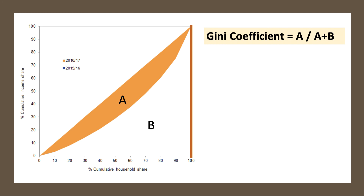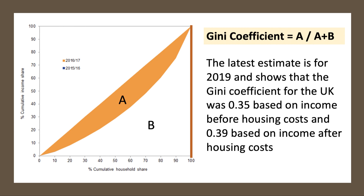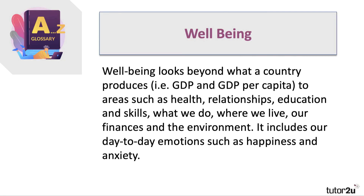Going back to the Lorenz curve: the Gini coefficient is the area A divided by the area A plus B. If there were no inequality you'd have a value of zero — area A disappears — and if there's perfect inequality, a value of one. The figure for the UK for 2019 shows a Gini coefficient of 0.35 before housing costs and 0.39 after housing costs. Housing costs — in particular the cost of renting — are a massive cost for many households, taking up a big percentage of disposable income.